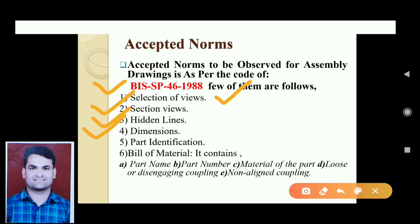The fourth norm is dimensions. Dimensions are given in detailed working drawings and can be either unidirectional or aligned, but not both in the same set of drawings. Dimensions are not generally given on assembly drawings.